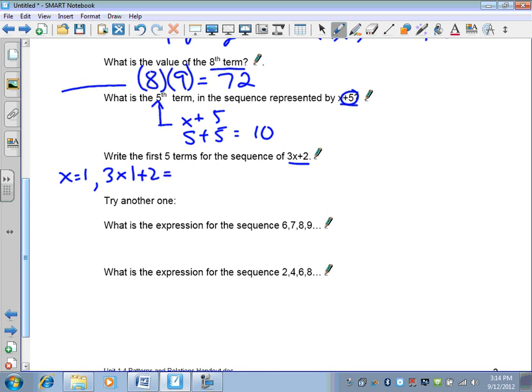Next one is giving you a relation or an expression of three x plus two, and they want you to write the first five terms. So when x is equal to one, the term is going to be one times three, or three times one, plus two. So my first term is going to be five. My second term, that's when x is equal to two, that's going to be three times two, plus two, and that's going to be equal to eight. Also, if x is three, three times three is nine, plus two is eleven. If it's four, three times four is twelve, plus two is fourteen. And if it's five, three times five is fifteen, plus two is seventeen. So those are the first five terms in the sequence of three x plus two.